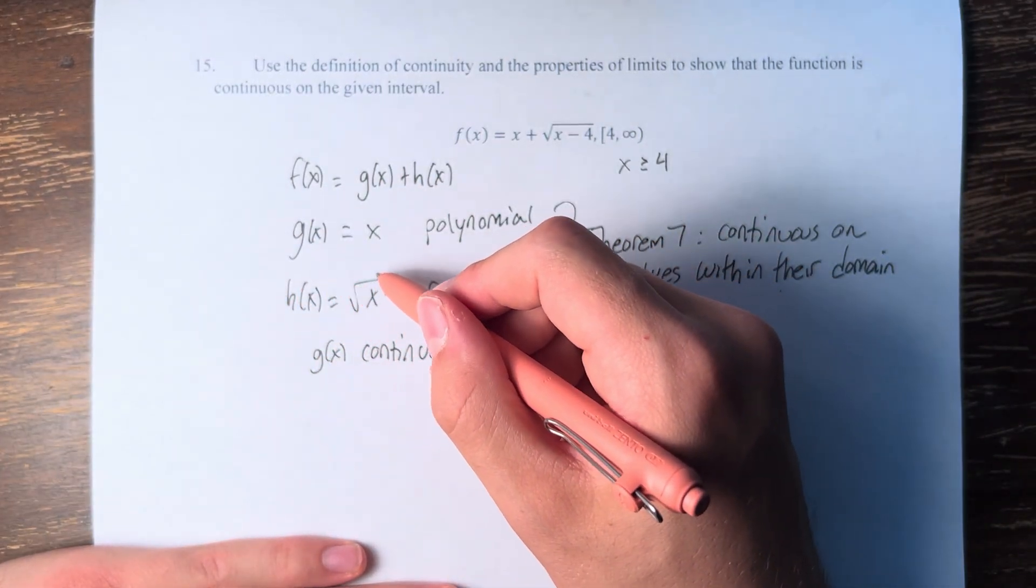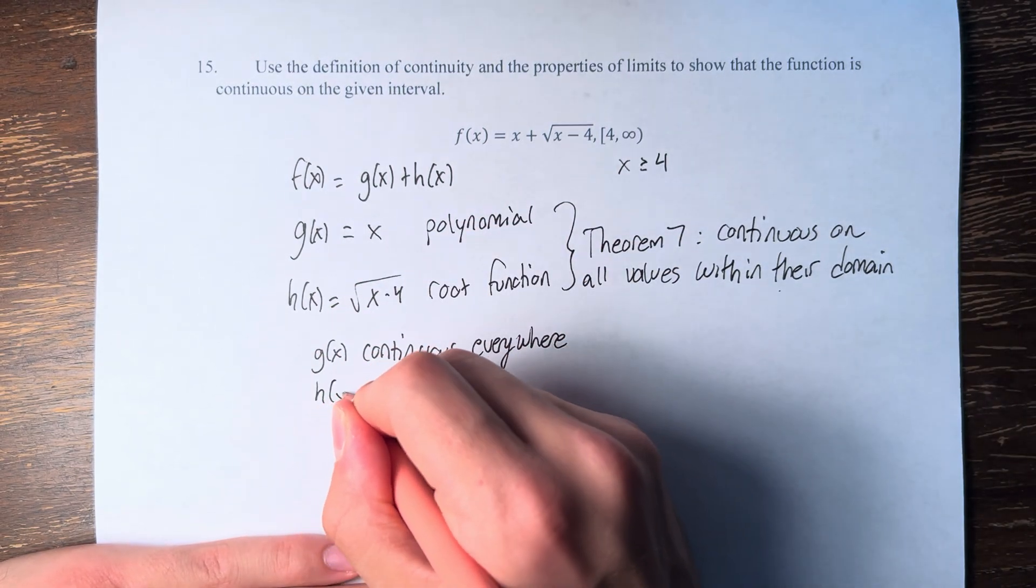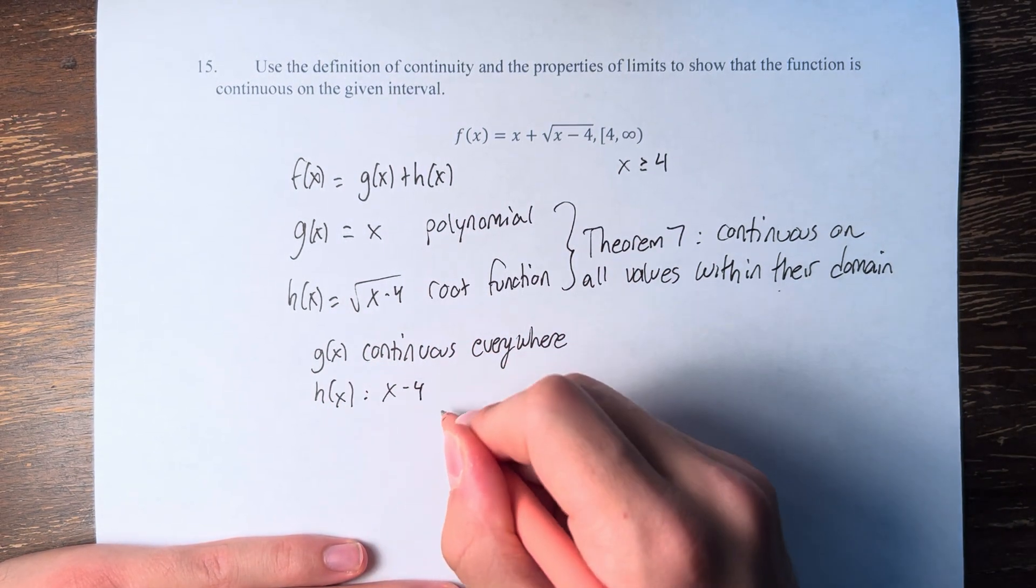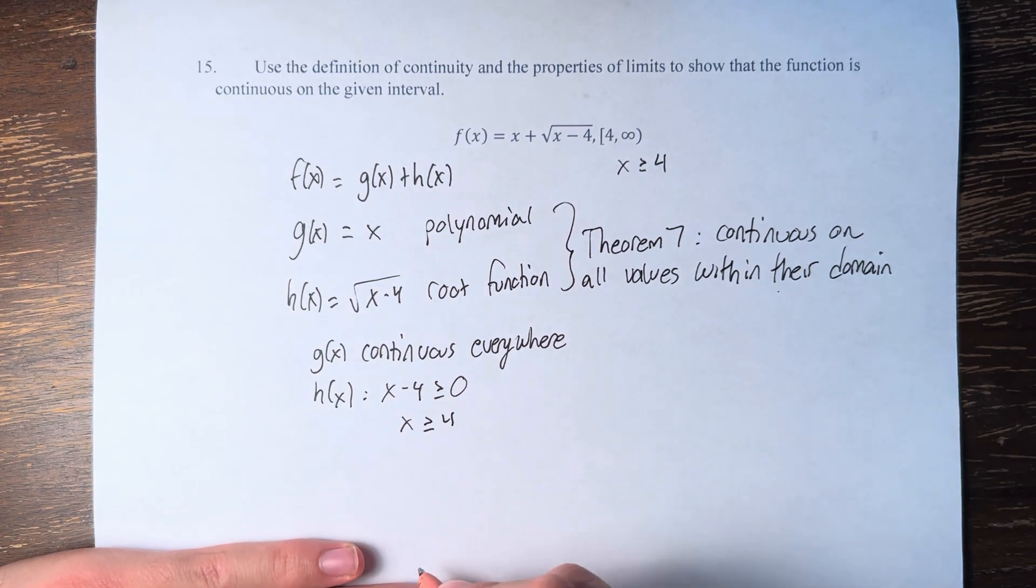h of x is a square root. So the restriction is that we can't be taking the square root of a negative number, so it must be greater than or equal to 0, and for x has to be greater than or equal to 4.